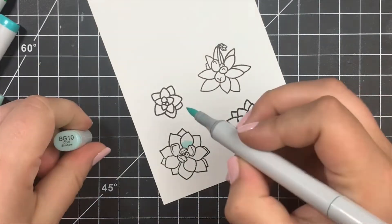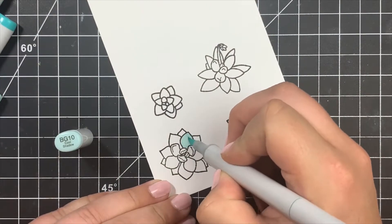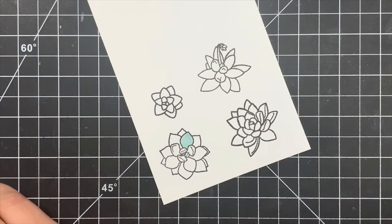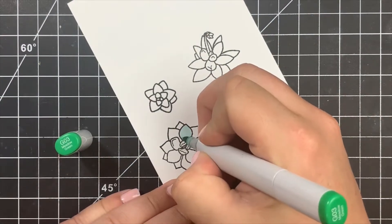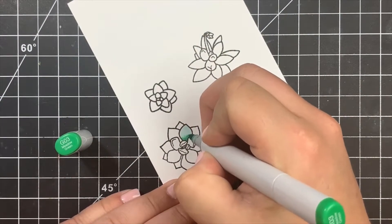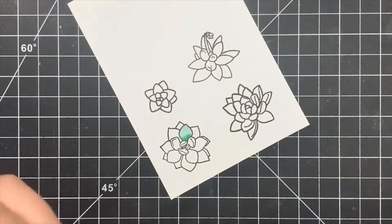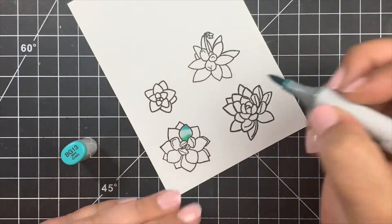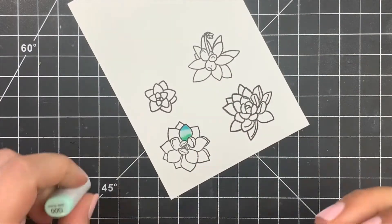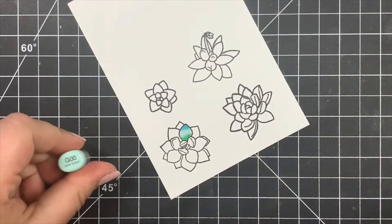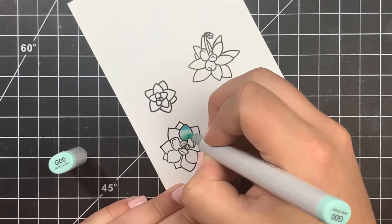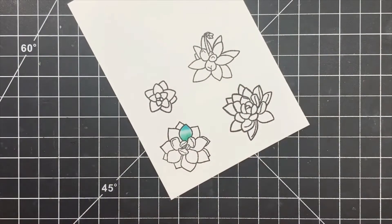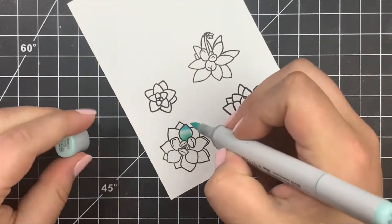What I like to do is work on one petal at a time and place down my lightest colors first on the top and bottom of the little petal. Then I'm going to add in some of that G03 towards the bottom or the base of the petal, and then a little bit of the BG13 on the very tip. Then I'll bring in my two lightest colors and blend those areas out.